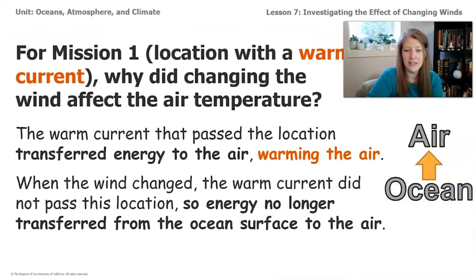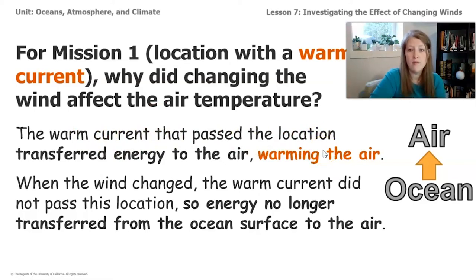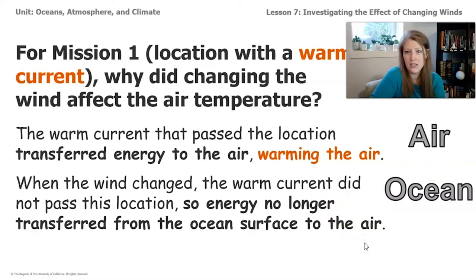Here's what we discovered from mission one — the location with a warm ocean current: why did changing the wind affect the air temperature? The warm current that passed the location transferred energy from the ocean to the air, warming the air. But when the wind changed and the warm ocean current didn't pass this location anymore, the energy no longer transferred from the ocean to the air. So the air actually got a little bit colder, which is what we saw in our data.